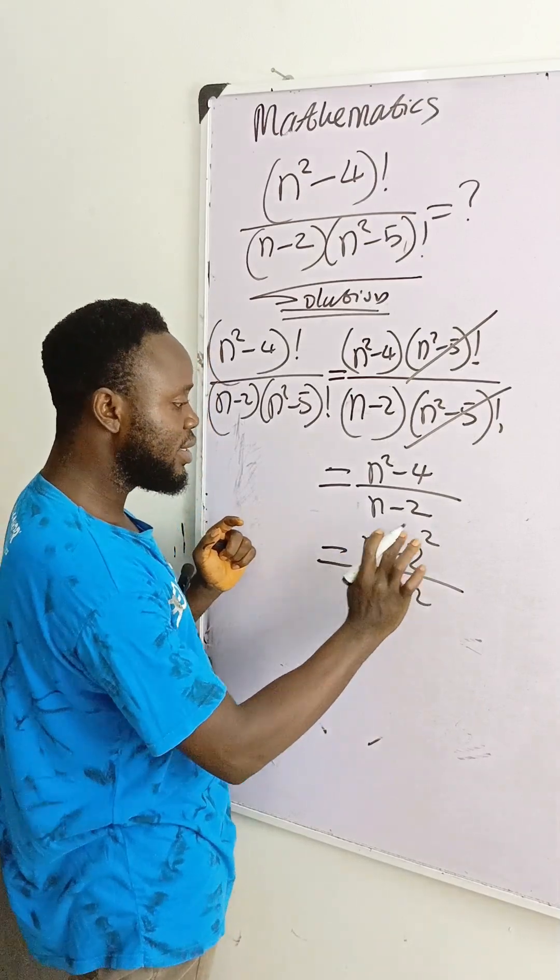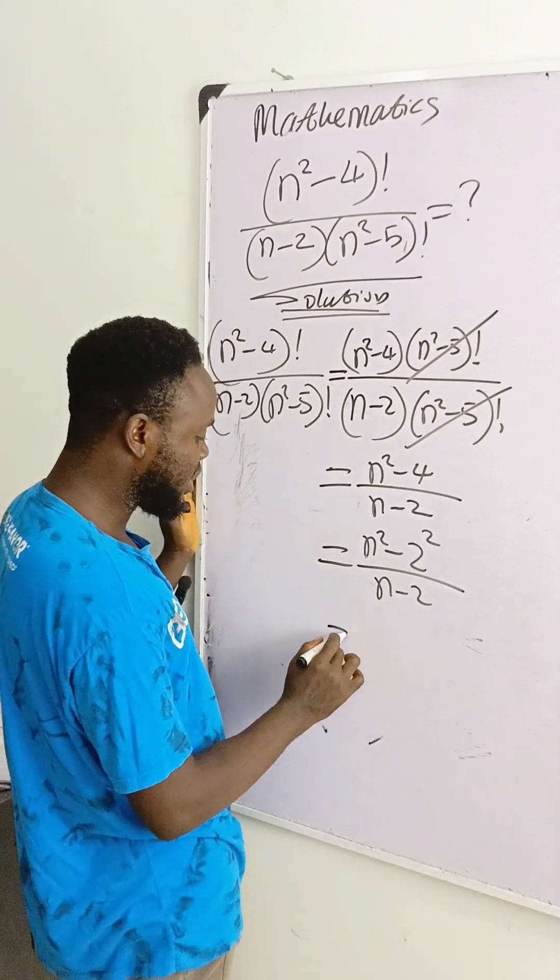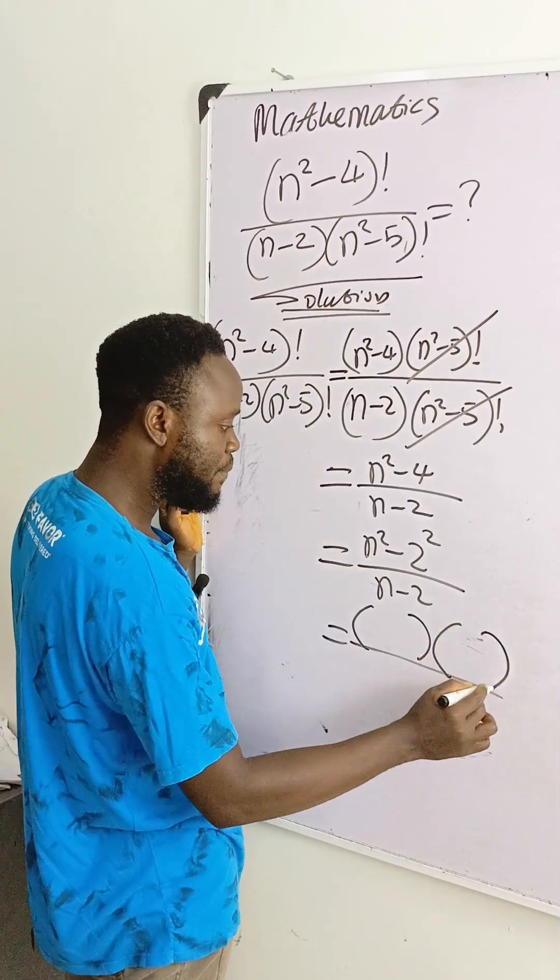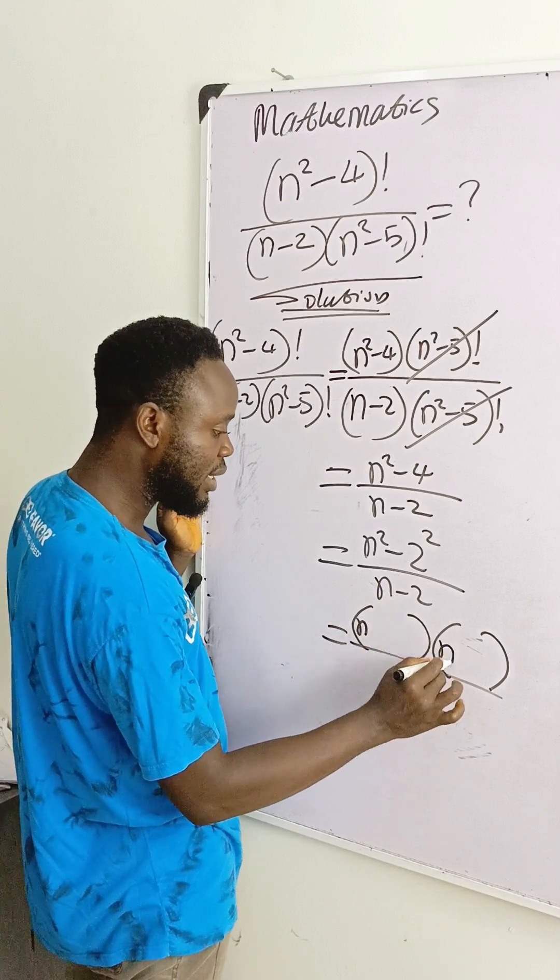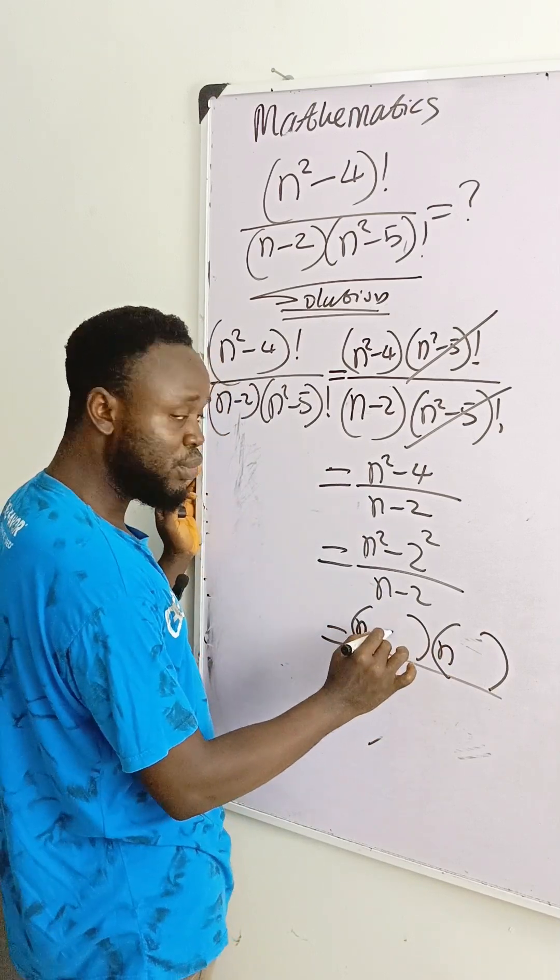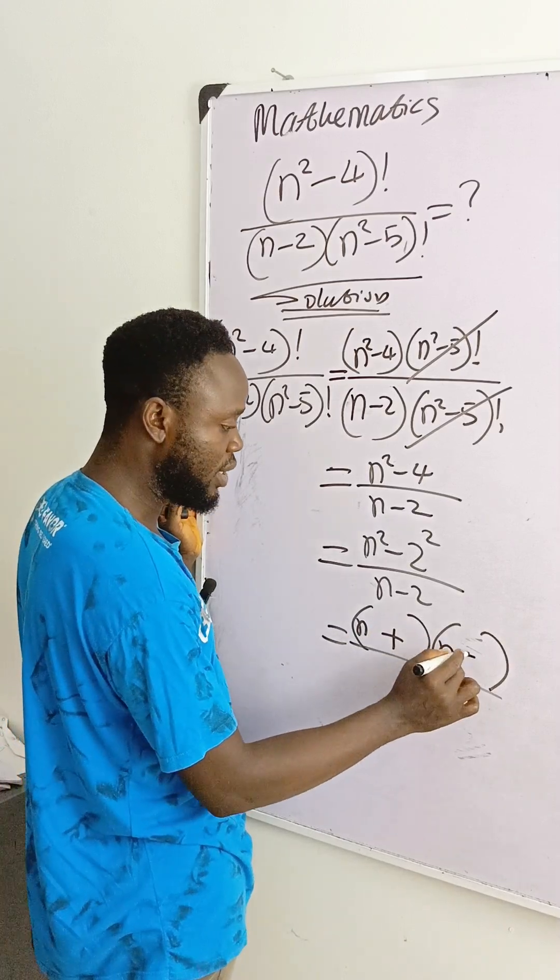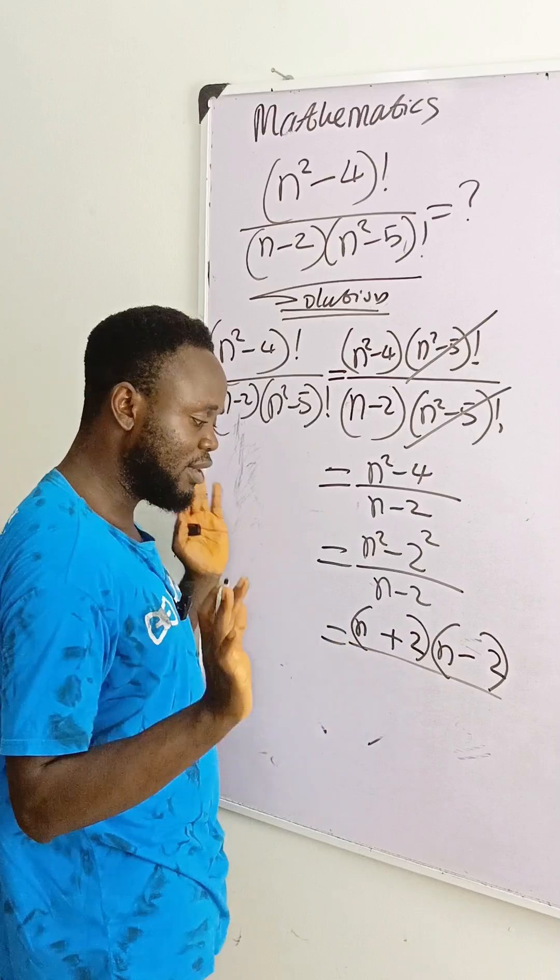Then n squared minus 2 squared is difference of two squares and has a formula. Look at how you do it. Open two brackets. The first letter here is n. Write it at the first part of the bracket, two brackets. Then you write plus here and minus here. The last number here is 2. Write it here and write it here. As simple as that.